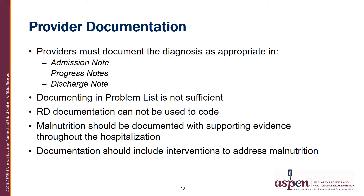What is the optimal way to document malnutrition in the medical record? Providers must document the diagnosis in the admission note, progress notes, or discharge note. Using the problem list alone would be insufficient for appropriate coding of malnutrition. RD documentation — the dietitian's progress note — cannot be used to code for malnutrition. Malnutrition should be documented in the provider's notes with supporting evidence throughout the hospitalization, and documentation should include interventions to address malnutrition.